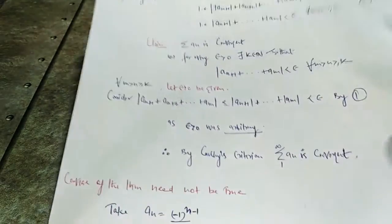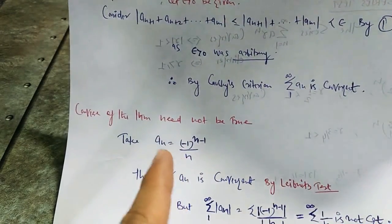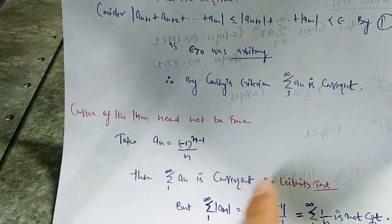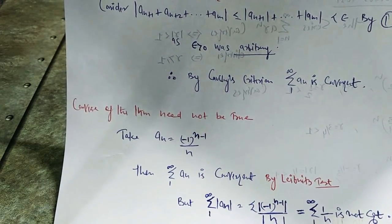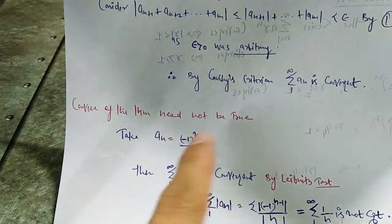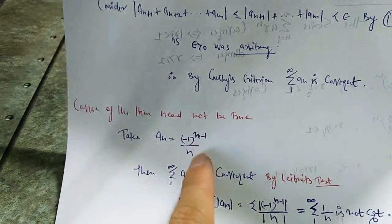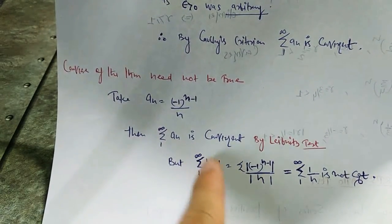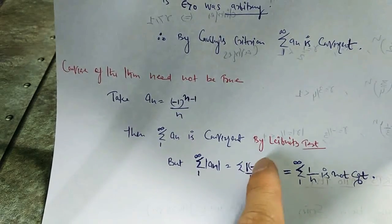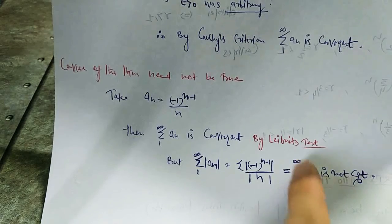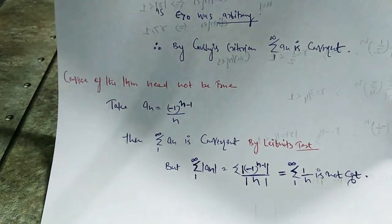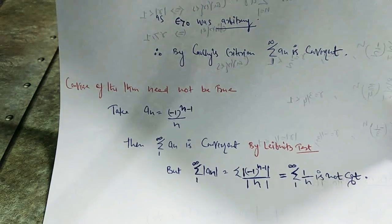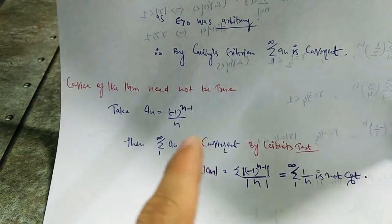So by Cauchy's criterion, series aₙ is convergent. But the converse of the theorem need not be true. For the counterexample, define aₙ = (-1)^(n-1) / n. Then this series is convergent by Leibniz's test, which we will study later. But when we take the modulus of each term, series |aₙ| = series 1/n, which is the harmonic series and is not convergent. So if asked in an exam to give an example of a series that is convergent but not absolutely convergent, produce this example.